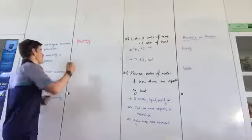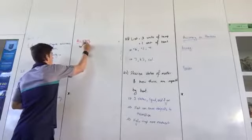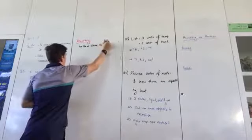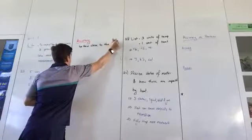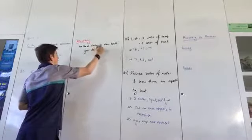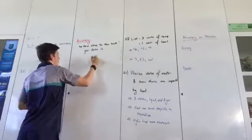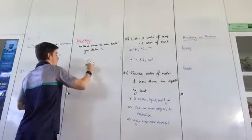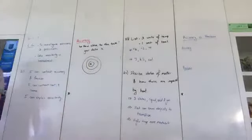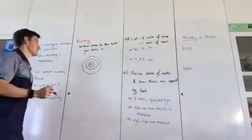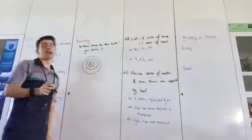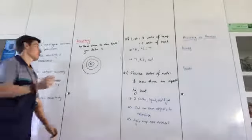Accuracy represents how close to the truth your data is. If we think of a dartboard, we're asking ourselves: does our data aim at the bullseye? Are we aiming for the right thing?